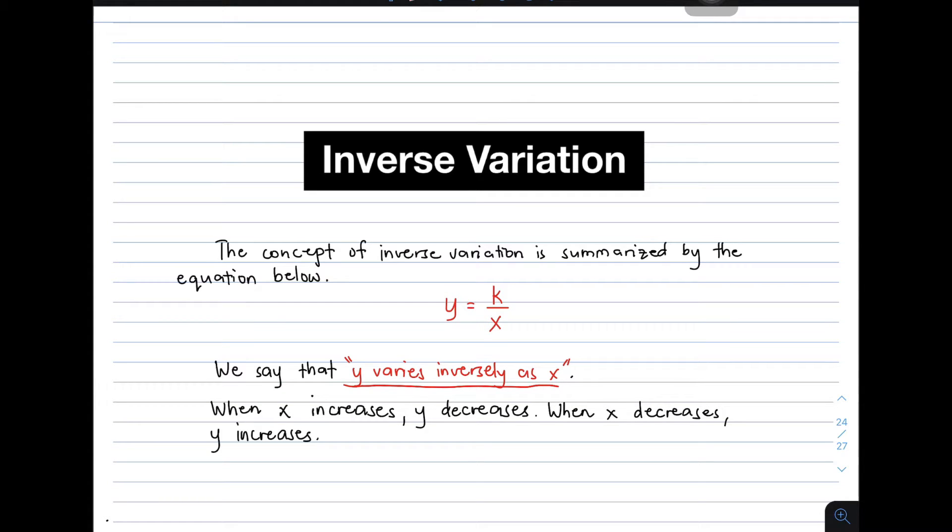Another thing about it is that when x increases, y decreases. And when x decreases, y increases. This one is the opposite of direct variation. Remember that when you say variation, it is the relationship between two variables. In direct variation, if one variable goes up, the other goes up also. If one variable goes down, the other also goes down. But in inverse variation, when one variable increases, the other variable decreases. While if x decreases, the variable y will increase. That's the behavior of inverse variation.